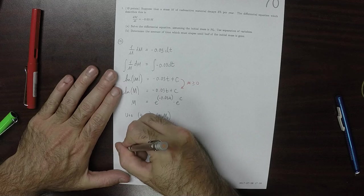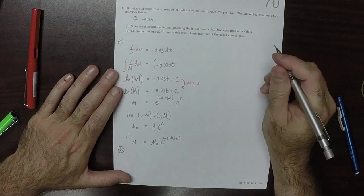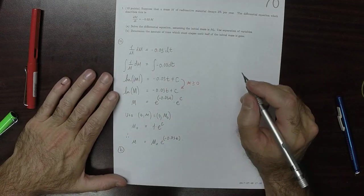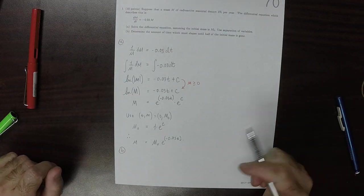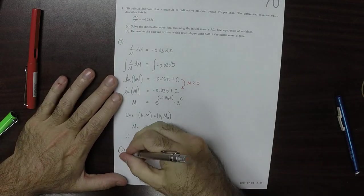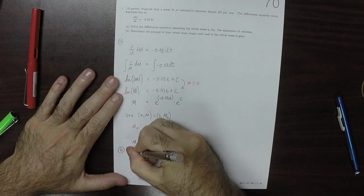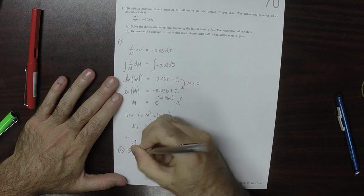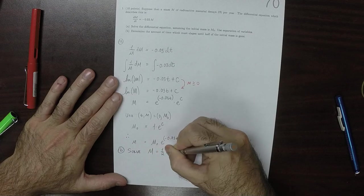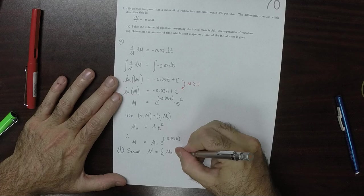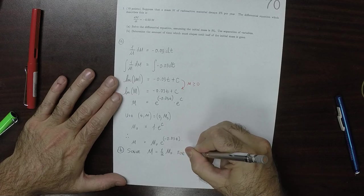Okay, B. So we know that the mass is originally m0. We want to solve m equal half m0 for variable t.